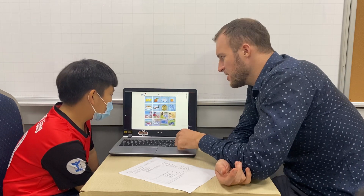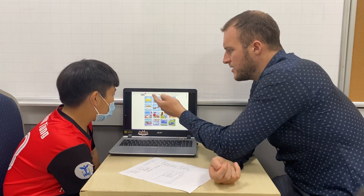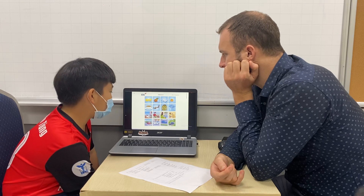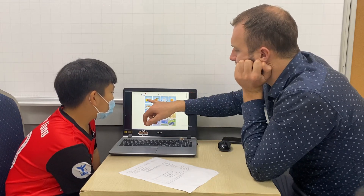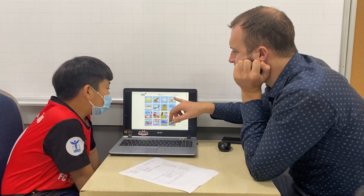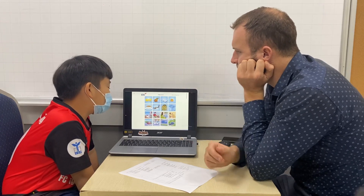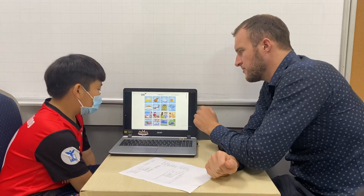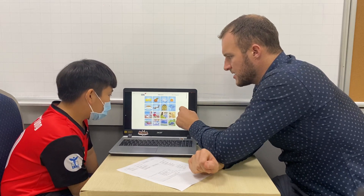Okay, so here there are four things — one is different. Which one is different? The book is different. Why is it different? Well, what are these? Good job, they're all fruit. Yeah.